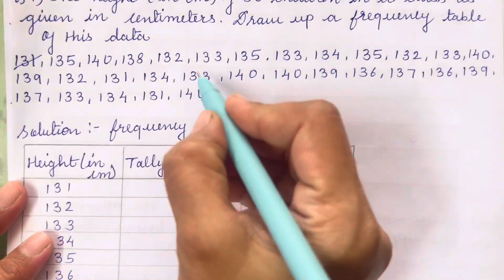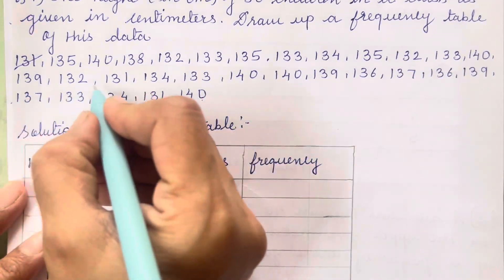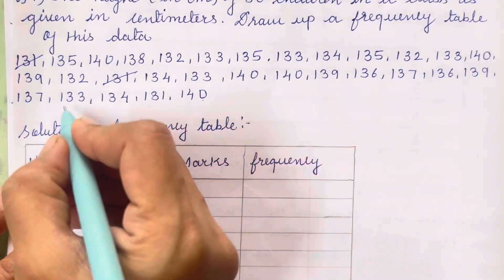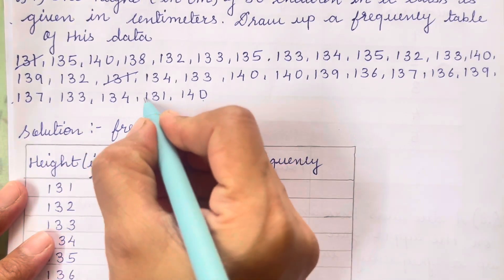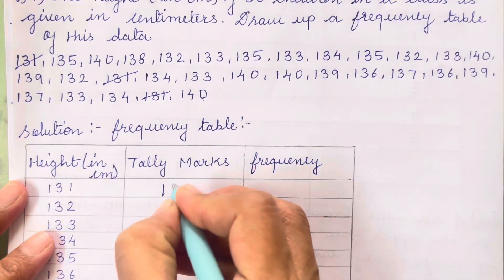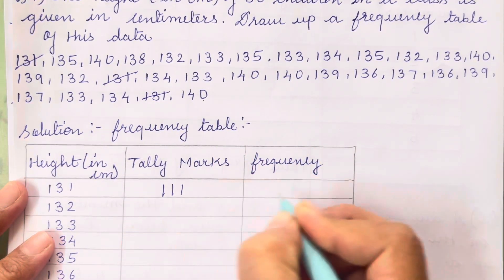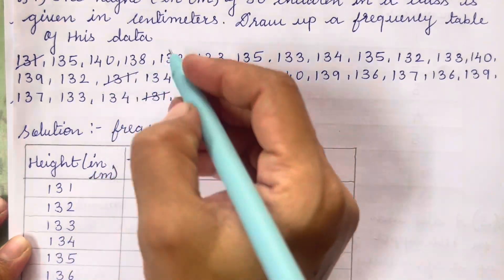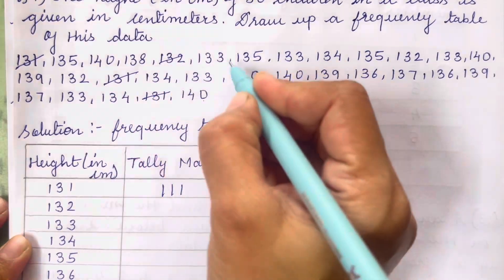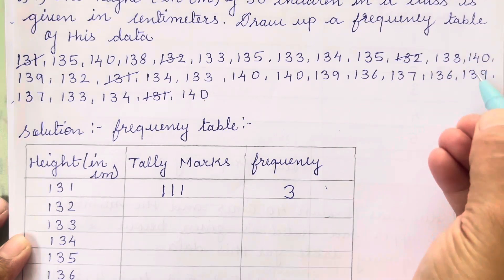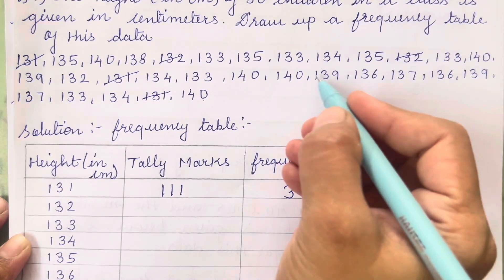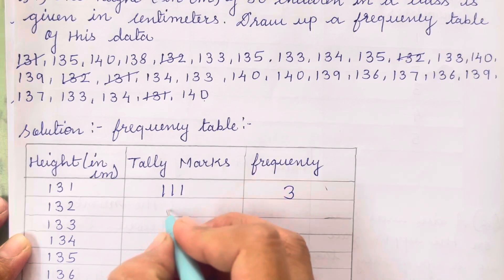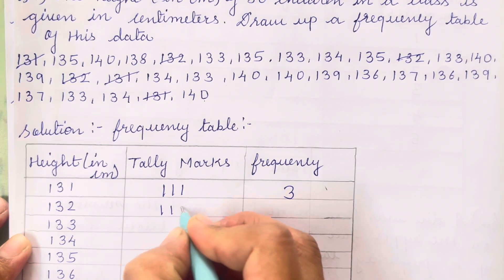For 131: counting gives us 1, 2, 3 — so the frequency is 3. You can directly write the frequency. Now for 132: counting gives us 1, 2, 3 — again the frequency is 3.